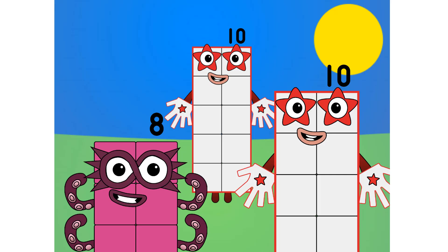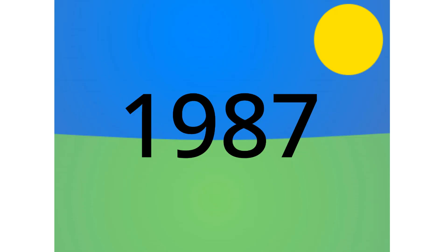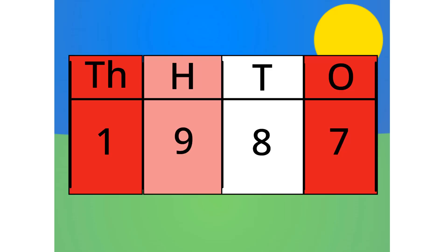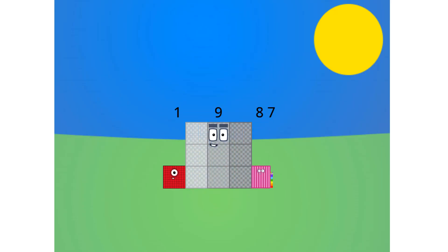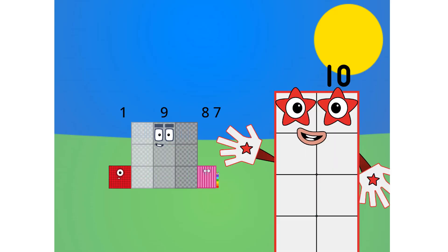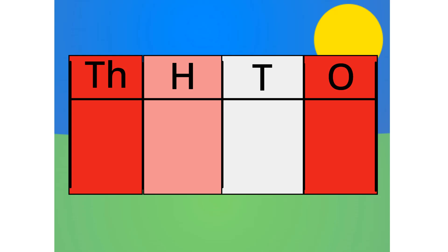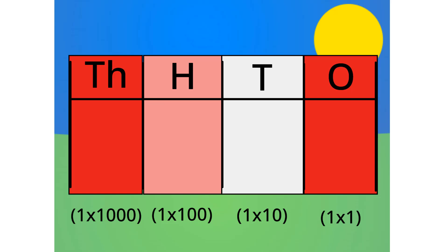Let me show you all why we count in base 10 in a few different ways. First off, the number table. Let's do 1,987 for example. This number is made up of 1,000, 9 hundreds, 8 tens, and 7 ones. The number multiplies by 10 each time it goes left one column. Because it multiplies by 10 each time, we call this system base 10.